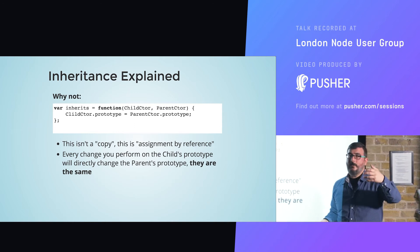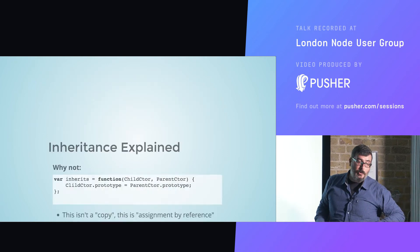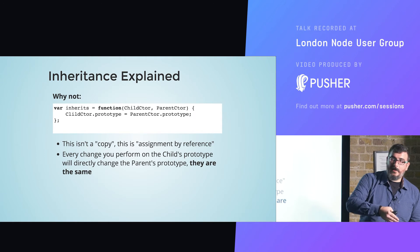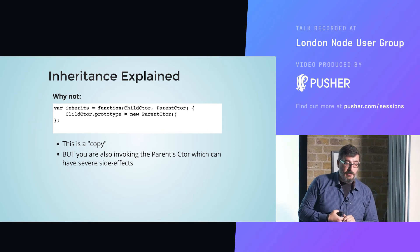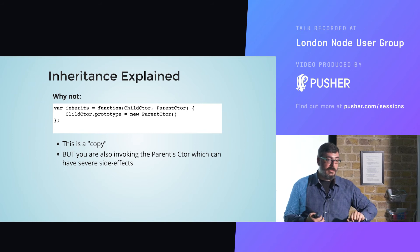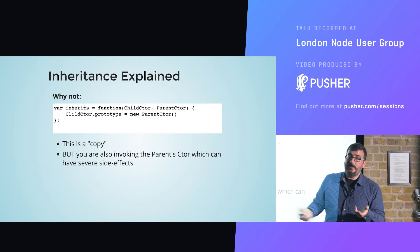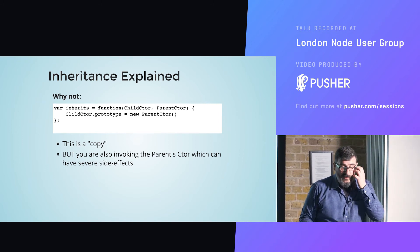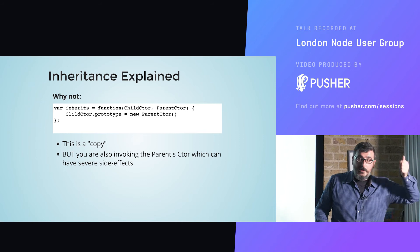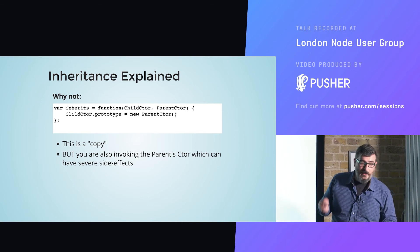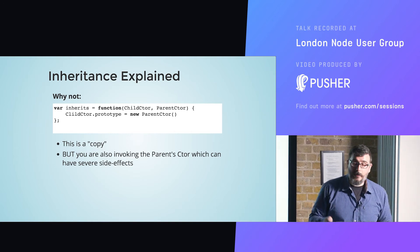That is why we need a temporary constructor — to initialize and do the new temp constructor. The reason we need that new is because in ES3 we lacked the Object.create method. The reason we instantiate the temporary constructor instead of instantiating the parent constructor directly is that within the context of inheritance, we would unintentionally invoke the parent constructor, which can have dire consequences. That's why we need a temporary constructor to perform the copy of the prototype.